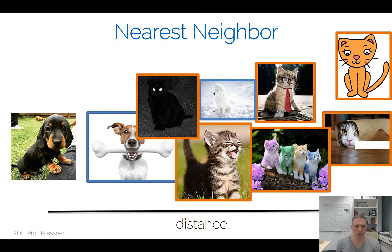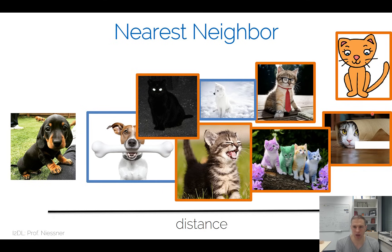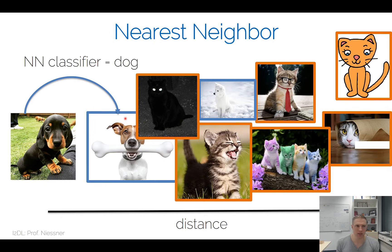Here we have our query image and all the reference images, and we get a distance value to each one, sorted by distance. The dog image is supposedly the closest, and the cat images are the furthest away. The idea behind the nearest neighbor classifier is: after computing and sorting the distances, we simply assign the class label of the closest one. So the nearest neighbor classifier would simply say this is a dog.